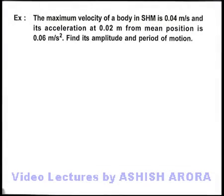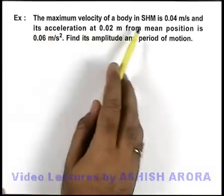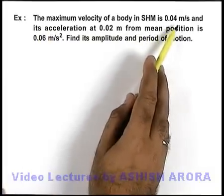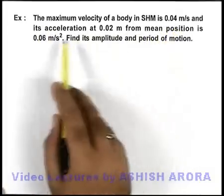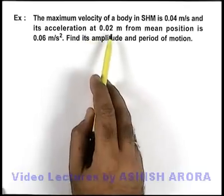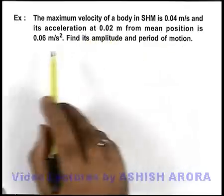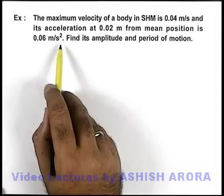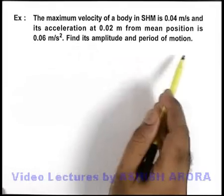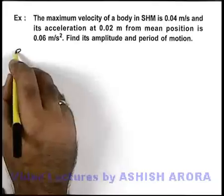In this example, we are given that the maximum velocity of a body in SHM is 0.04 meters per second, and its acceleration at 0.02 meter from mean position is 0.06 meter per second square. We are required to find its amplitude and time period of motion.